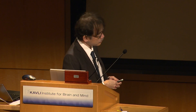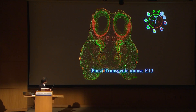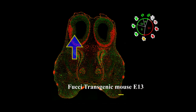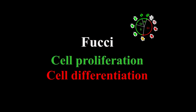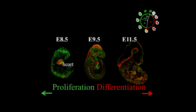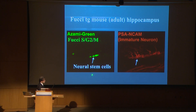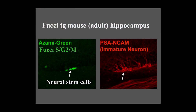We prepared FUCCI-expressing transgenic mice. This is a coronal section of an embryo. In the brain, neural stem cells had green or red nuclei in the ventricular zone, but post-mitotic neurons had only red nuclei in the cortical plate — green and red signifying cell proliferation and differentiation. During embryogenesis over time, the green-to-red ratio decreased: earlier means more proliferation, later means more differentiation. After birth, the red signal became predominant. But even in adult tissue, we can identify very few green nuclei corresponding to tissue stem cells, like neural stem cells in the dentate gyrus.